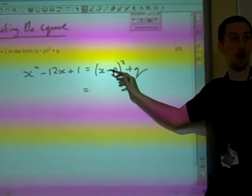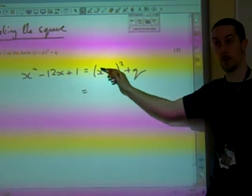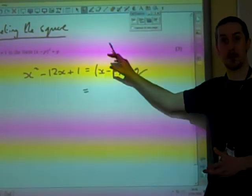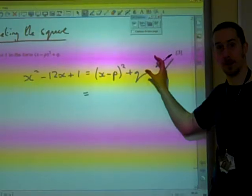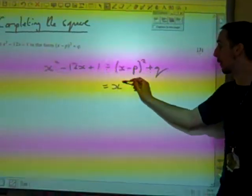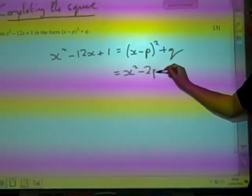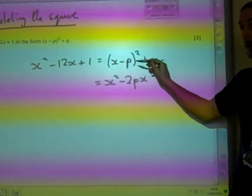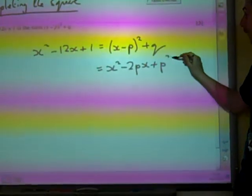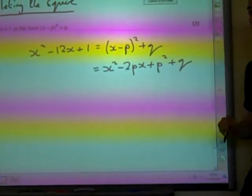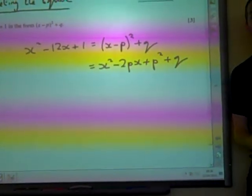Really careful about multiplying out a bracket with only two things in it. This is as if you're multiplying (x - p) by (x - p). So you'd have x², then you'd have -px minus another px, and then you'd have -p times -p, so +p². And then you've got +q.